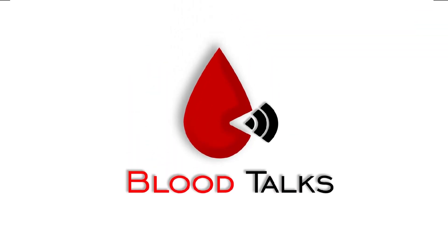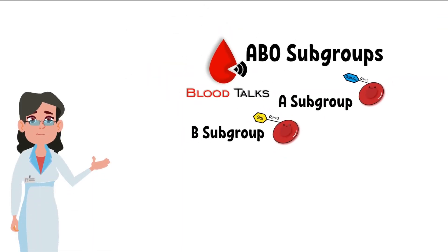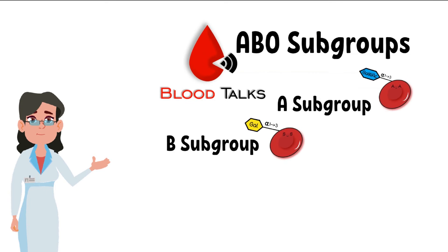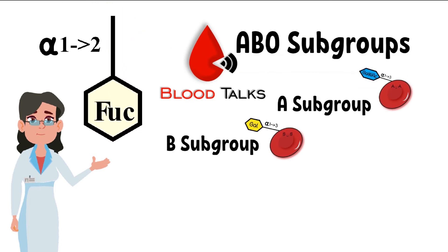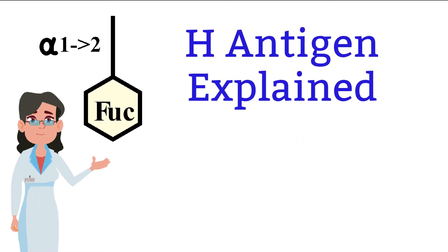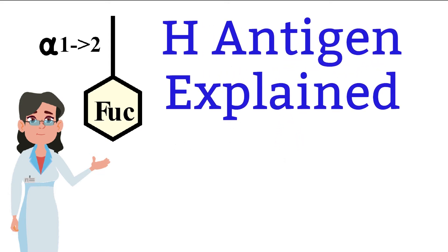Hi Blood Talk fans! We talked about ABO antigen blood groups already, and in that video we talked briefly about the H antigen. The H antigen is the precursor for A and B antigen. It serves as the base sugar for A and B enzymes to add sugar to the H antigen and convert it to either A or B antigen. This makes the H antigen important in ABO blood groups.